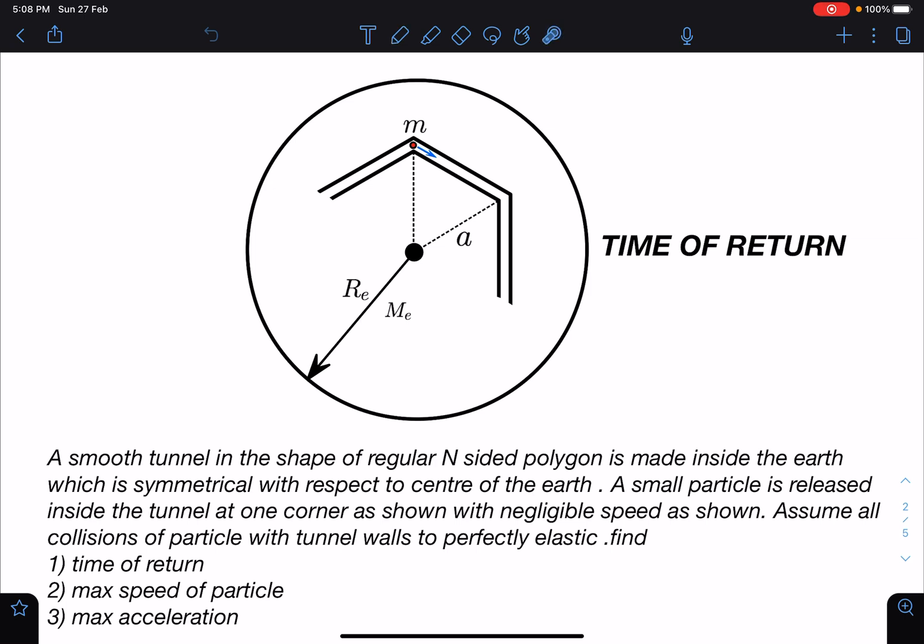A smooth tunnel in the shape of a regular n-sided polygon is made inside the earth which is symmetrical with respect to the center of the earth. A small particle is released inside the tunnel at one corner as shown with negligible speed. Assume all collisions of the particle with tunnel walls are perfectly elastic. Find time of return, maximum speed of particle, and maximum acceleration of the particle.